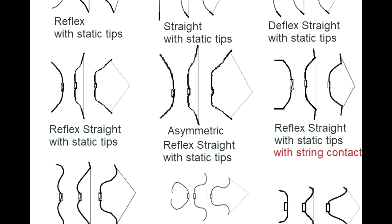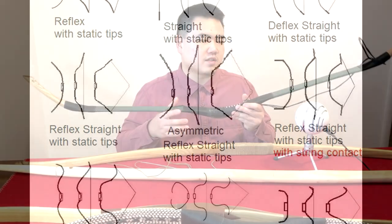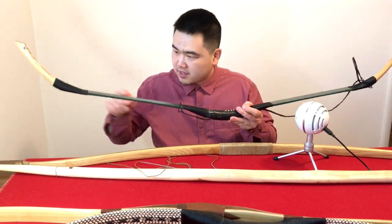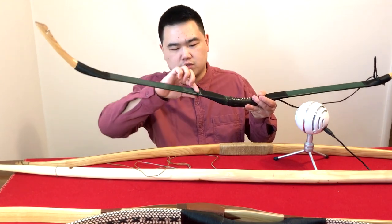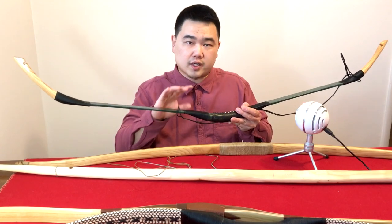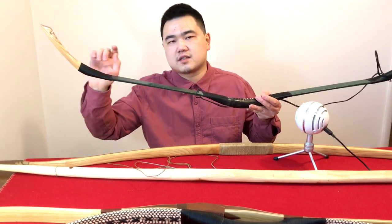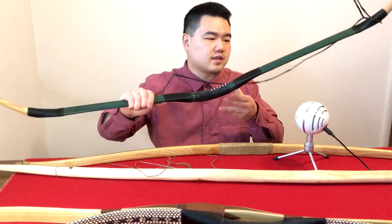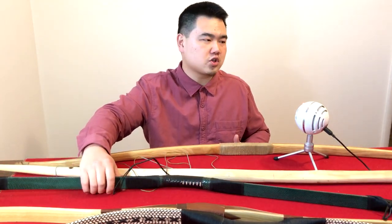Now we have the classic, most common horse bow: the reflex-straight with static tips. Whenever you look at a Hungarian bow, a Scythian bow, Magyar, Han Dynasty bows, Tang Dynasty bows — a lot of these are basically reflex-straight bows: reflex at the handle and then straight tips. The organic ones are reflex and then just at the tips it's straight but with an angle. So instead of calling it a horse bow or an Asiatic bow, you can call it a reflex-straight with static tips. Some people also say reflex bow with static tips.